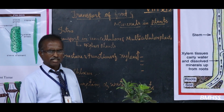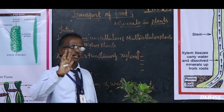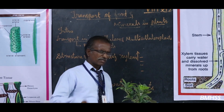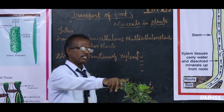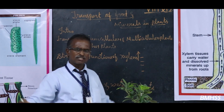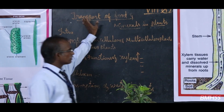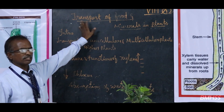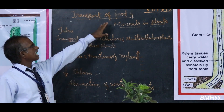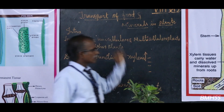Starch food material. Very good. Starch is the complicated carbohydrate food material. Now the food is prepared in where? Leaves. This food is transported to all other parts. Let us now we have to come to the new important and interesting topic, called transport of food and minerals in plants.